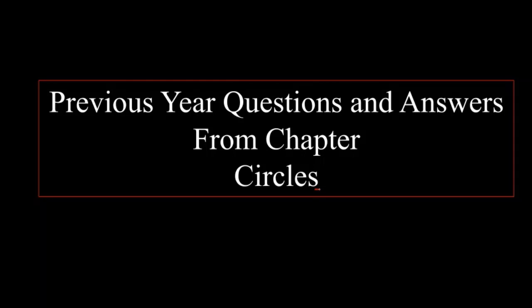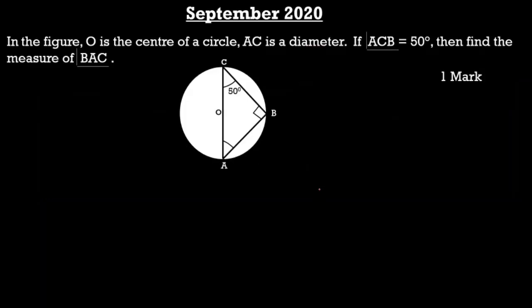First, we will solve the questions from the September 2020 question paper. The first problem is for one mark. The question is: in the figure, O is the center of the circle and AC is a diameter. If angle ACB is equal to 50 degrees, then find the measure of angle BAC.